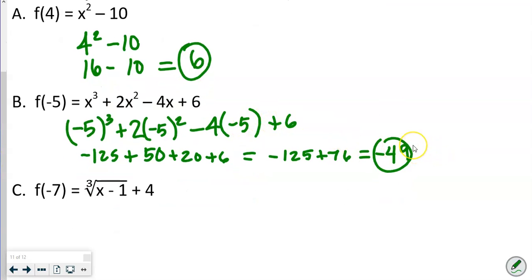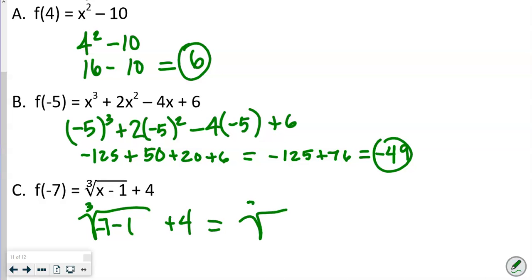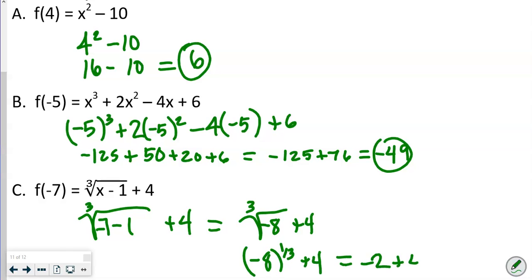For the third evaluation with a cube root function, f(−7): take the cube root of (−7 − 1) + 4 = cube root of −8 + 4 = −8^(1/3) + 4 = −2 + 4 = 2.